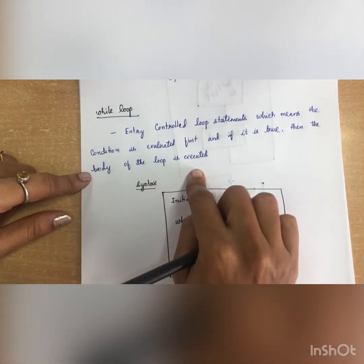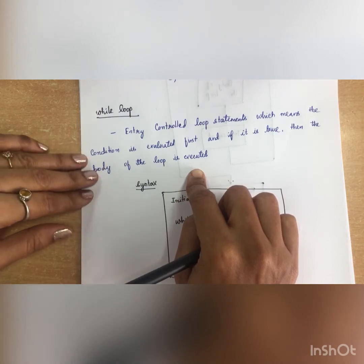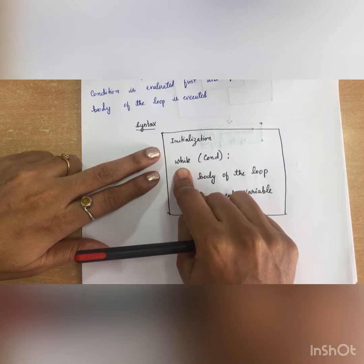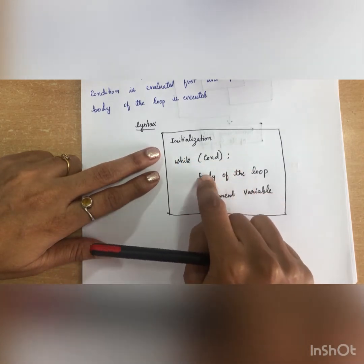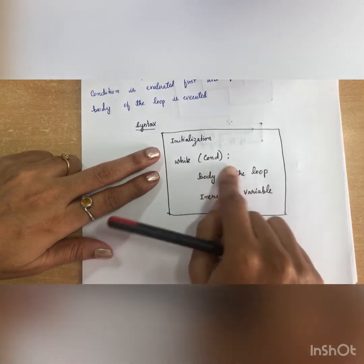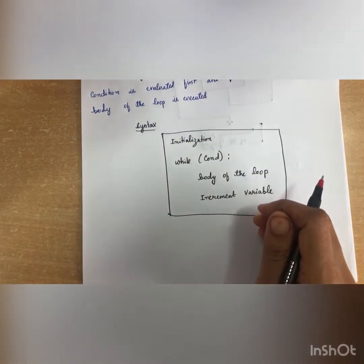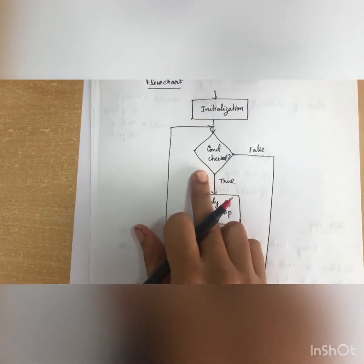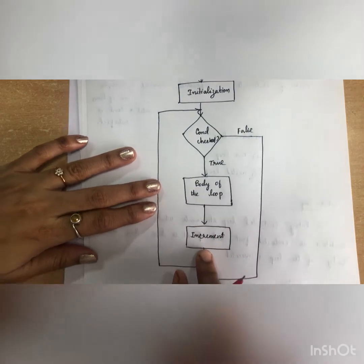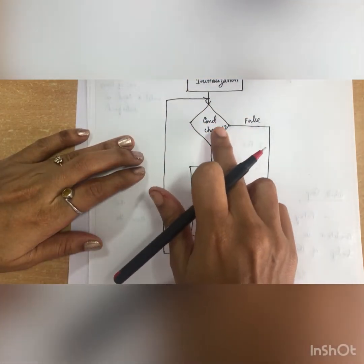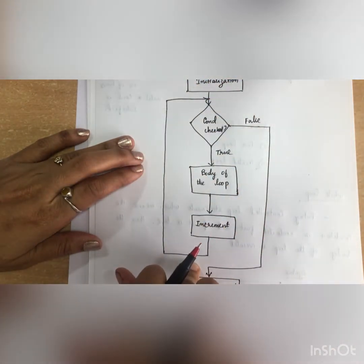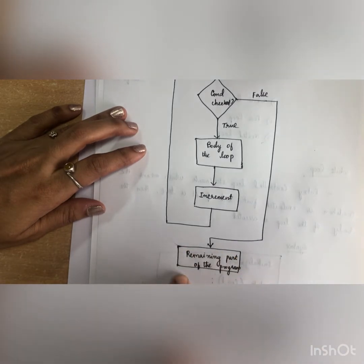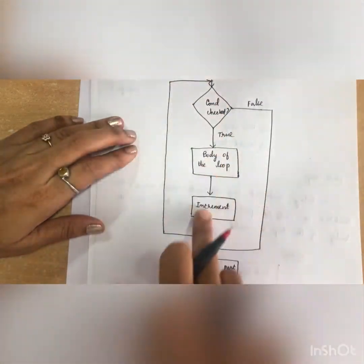The while loop is an entry controlled loop statement, which means the condition is evaluated first. If it is true, the body of the loop will be executed. The syntax includes an initialization part, then while condition colon, the body of the loop, and an increment variable. In the flowchart, first we have initialization, then the condition is checked. If true, it executes the body with an increment and loops back. If false, it exits and executes the remaining program.